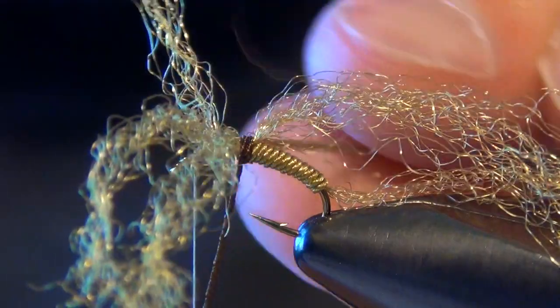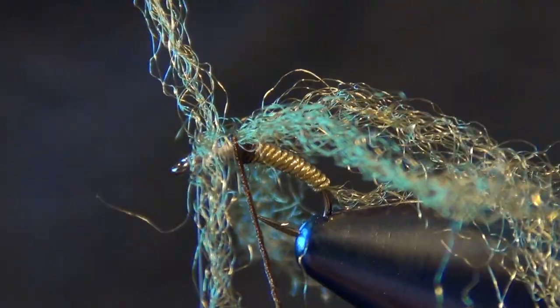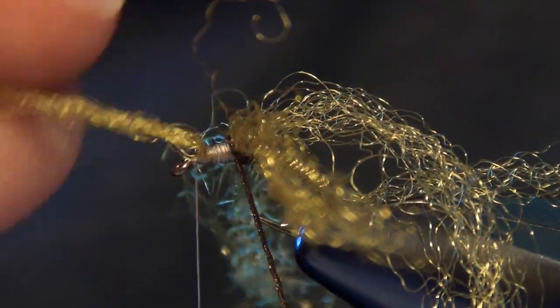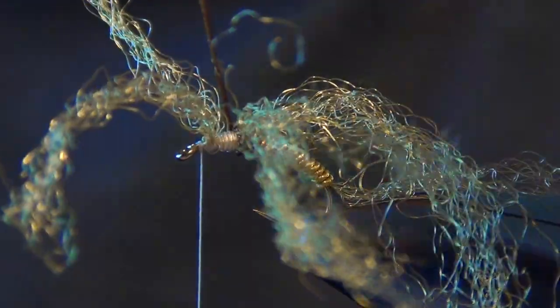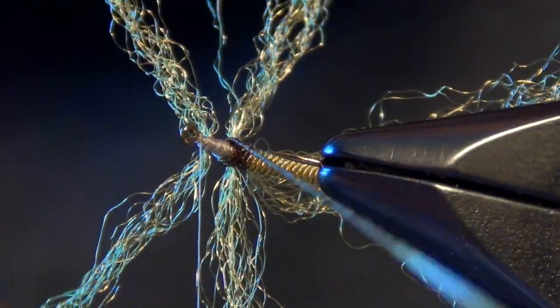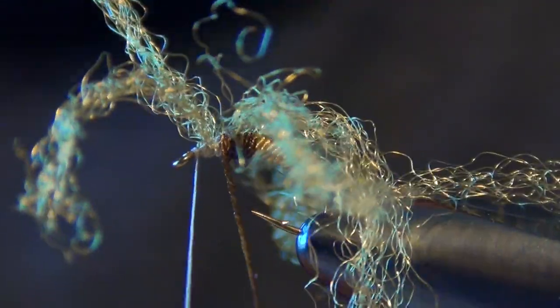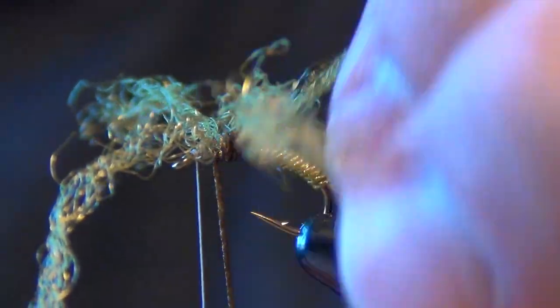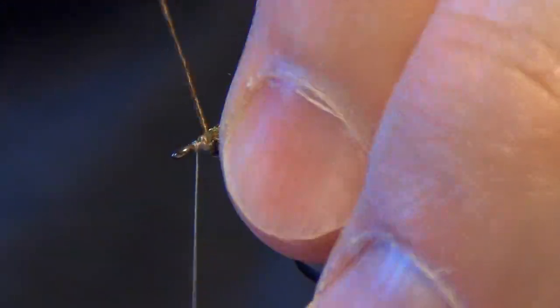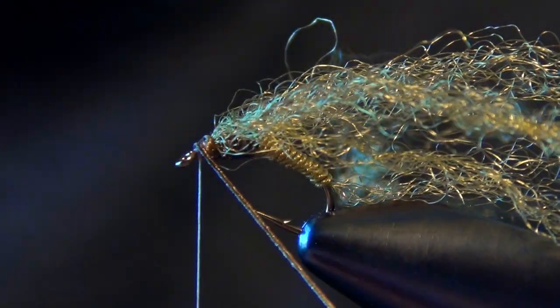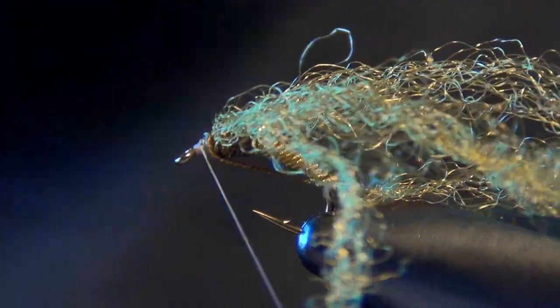Two wraps behind that first set of legs, then I'm going to make the wrap in front of that set of legs, making sure to separate my Zelon. I'll kind of pull the first set of legs forward out of the way, then we can continue to wrap. Usually I can get three or so wraps in between my sets of legs. Then we got to jump in front of that last set of legs.